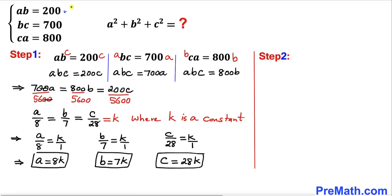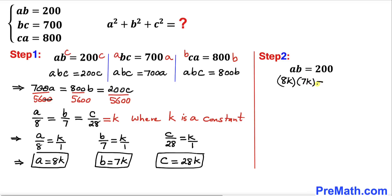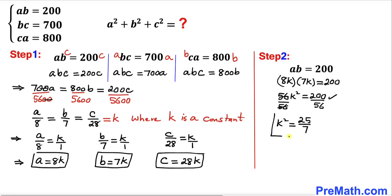For the next step, let's substitute back into the first equation ab = 200. Replacing a with 8k and b with 7k gives 8k × 7k = 200, which simplifies to 56k² = 200. Dividing both sides by 56, k² = 25/7.